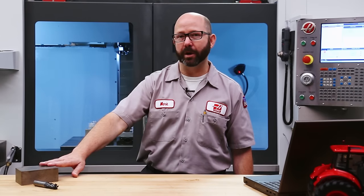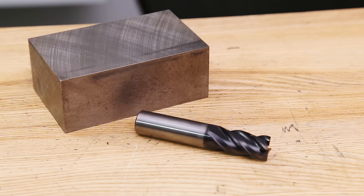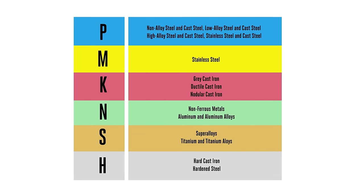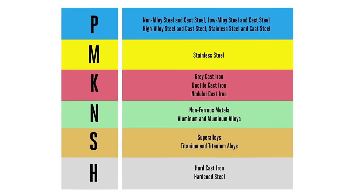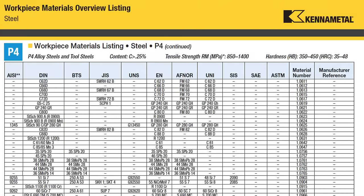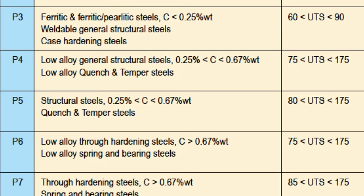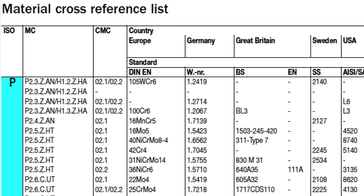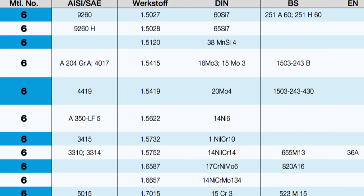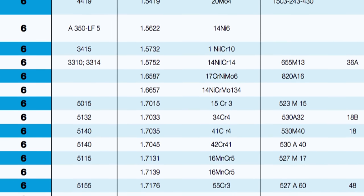I am working with a 4140 steel — at least that's what we call it here in the United States. If you're in Europe using EN names and numbers, this might be called 42CrMo4. If you're in Japan, you'll call it something different. But no matter where you are in the world, this material is going to fall into the P ISO material class. Now the number that follows our color-coded ISO letter changes between manufacturers — Kennametal calls this a P4, Niagara and Seco may call it a P5, Sandvik classifies it as P2.1, while Iscar and Widia might call it a P6 or P7. Same material, different tool vendor.